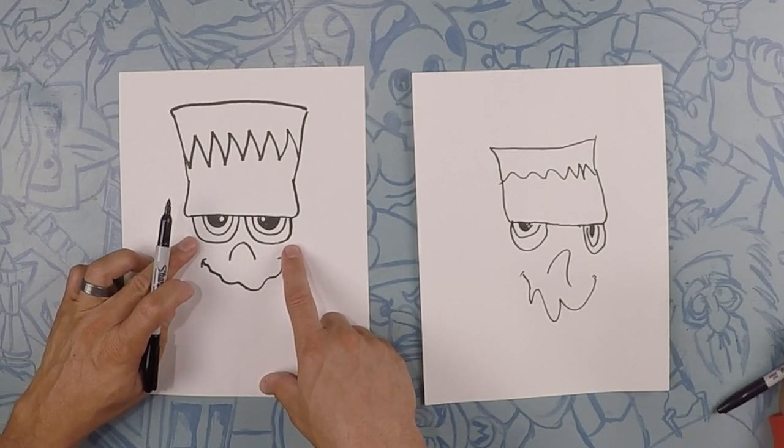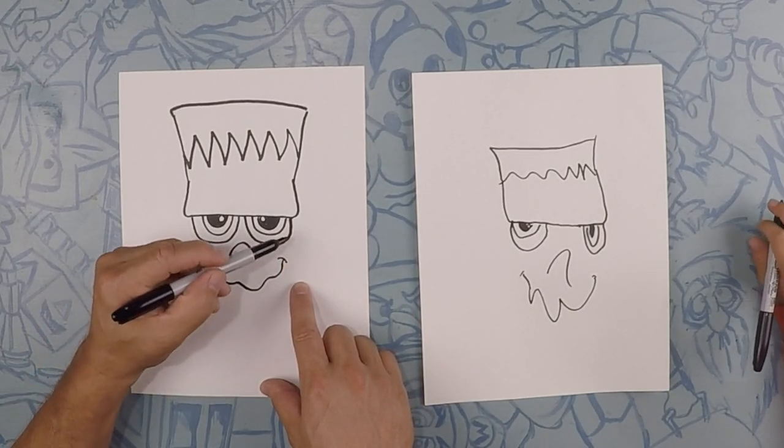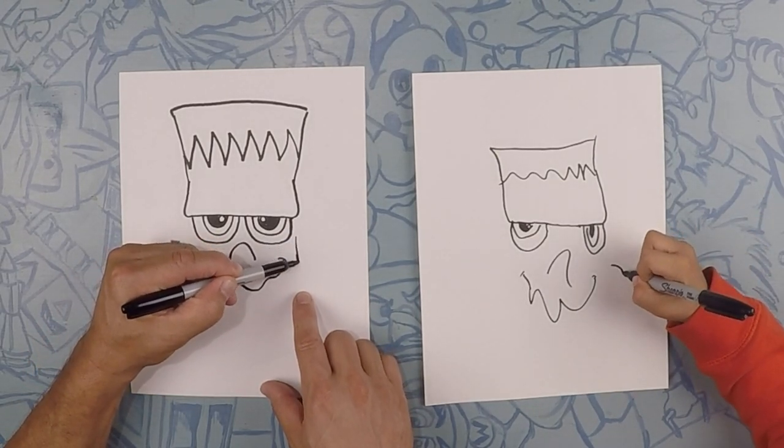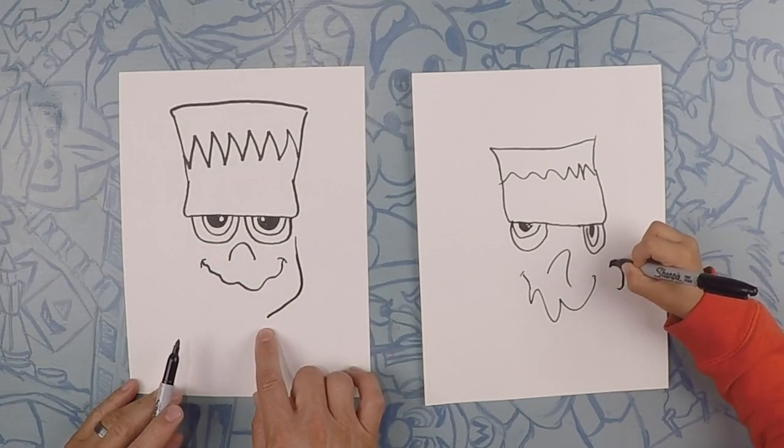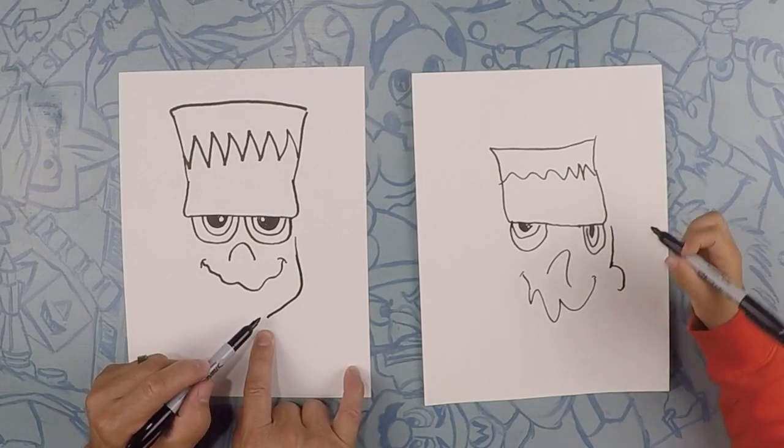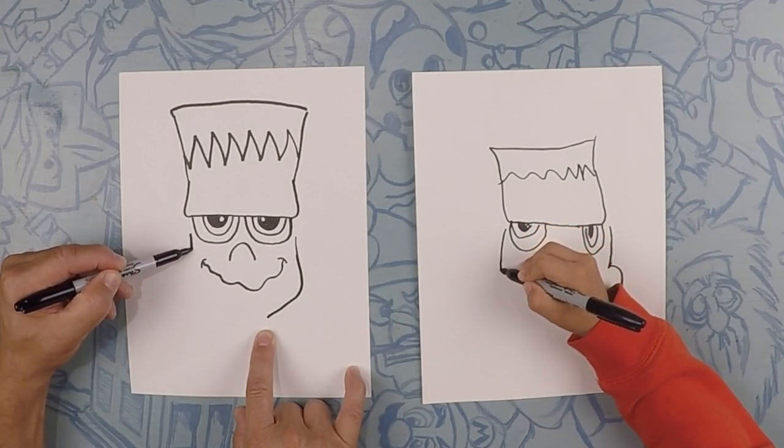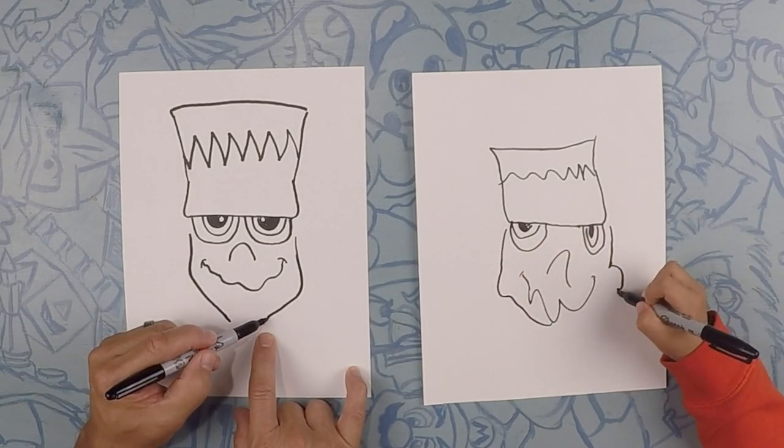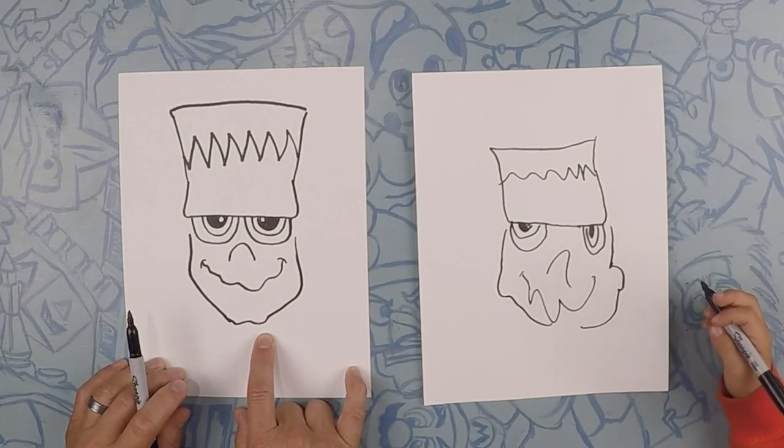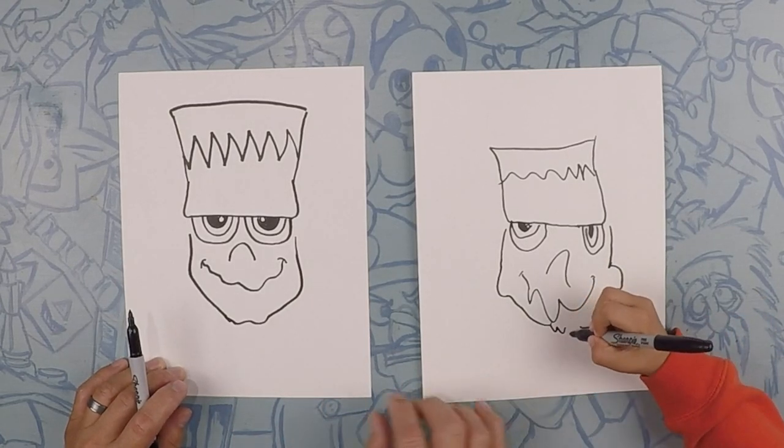Alright so next we're gonna do his cheeks. We're gonna do one cheek on each side. So we're gonna do kind of like a curve and let's come down like that. Come down to his chin. Same thing on this side. We'll curve and come down to his chin. Good. So close this off. Make his chin.